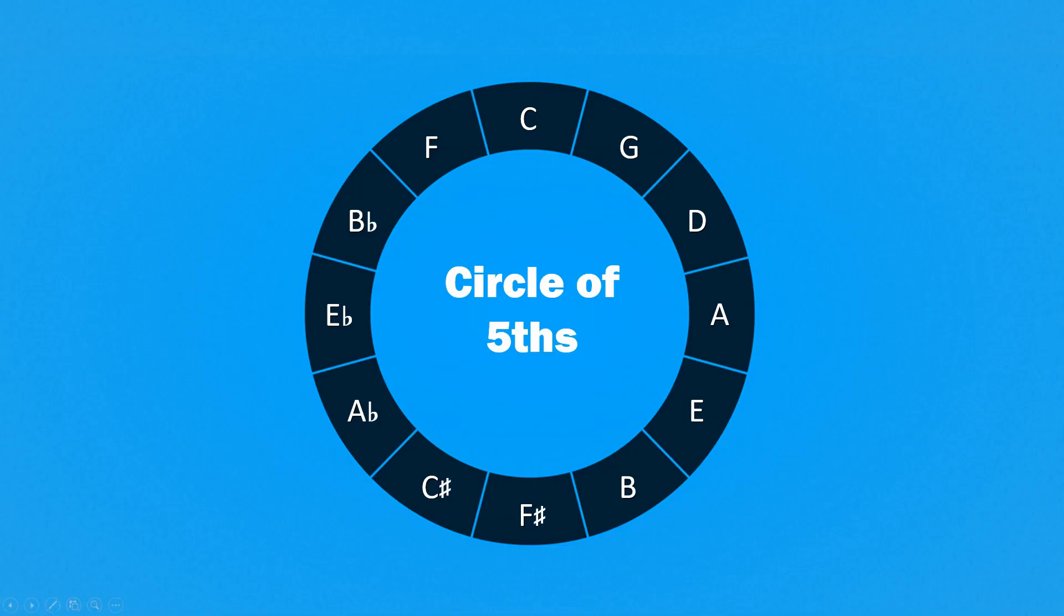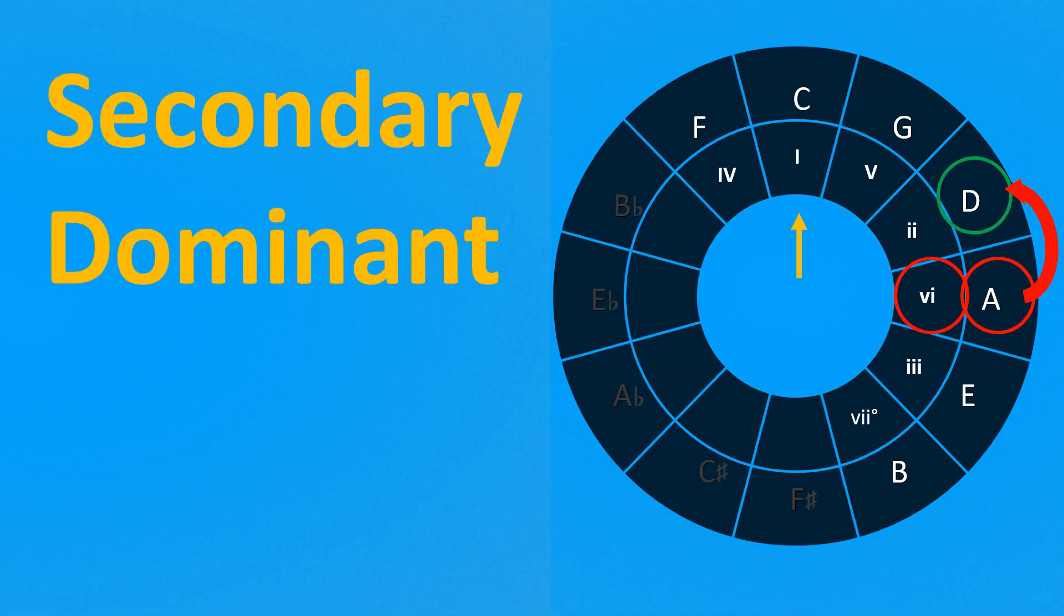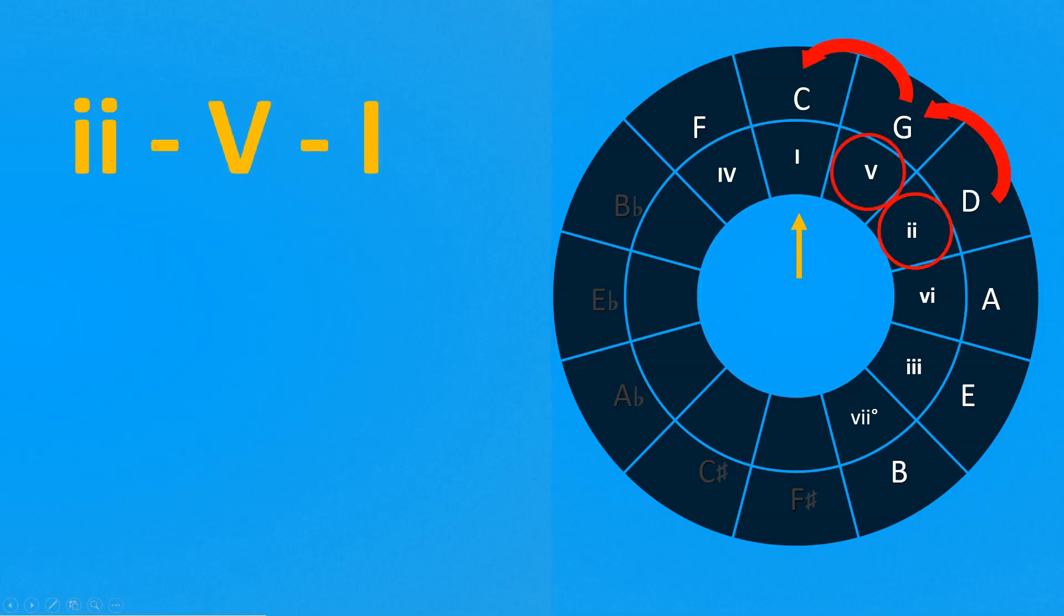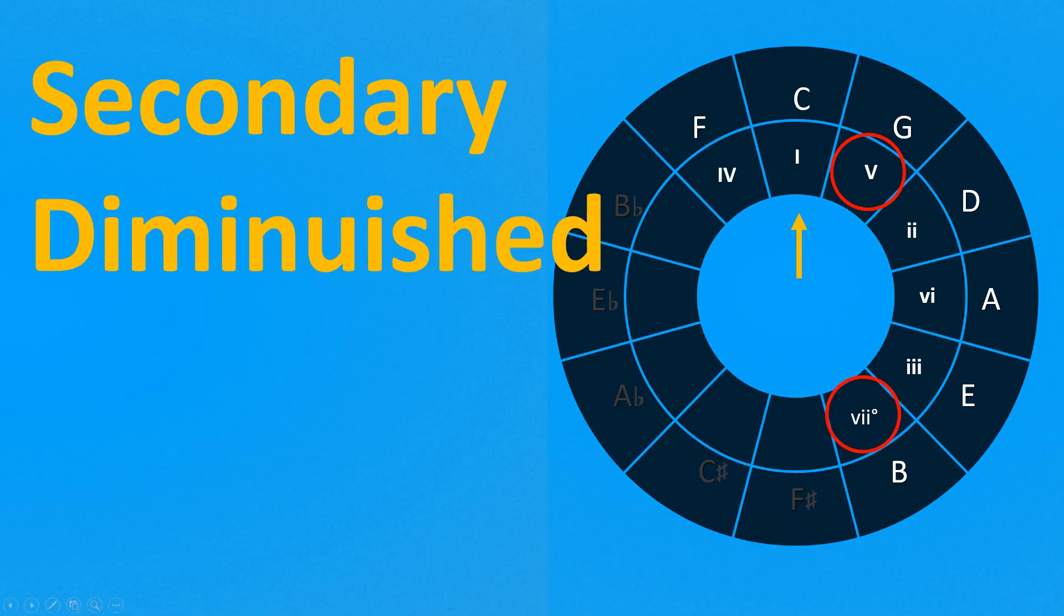In this video we will see the attraction of the chords, that means which chords are good to anticipate another chord. We're going to learn how to get secondary dominant, why the progression 2-5-1 is important, and how to get a secondary diminished chord. Let's dive into the circle.